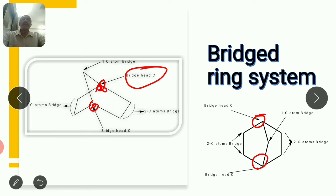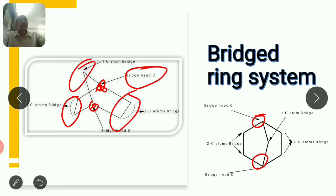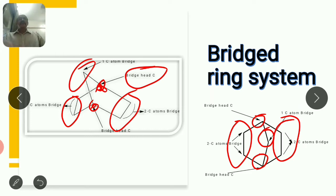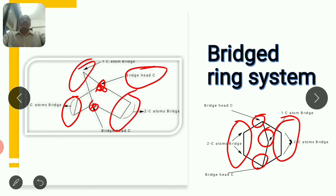Remaining carbons you classify as carbon atoms of the bridges. Here there are three bridges: a bridge of two carbons, a bridge of one carbon, and another bridge of two carbon atoms. Three numbers are important — other than bridge head carbons, there is a bridge of two carbons, another bridge of two carbons, and a bridge of one carbon atom. For spiro compounds you wrote square bracket x.y with only two values; that first value is of smaller ring and second is of larger ring, excluding the spiro carbon atom.